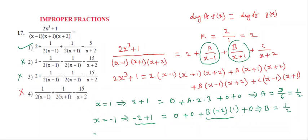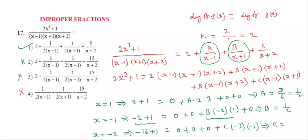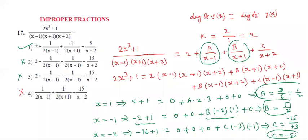If you want to find C also — take x equals minus 2 and substitute: 2(-2)³ + 1 = -16 + 1 = -15. All other terms are 0. C into (-2-1)(-2+1) = C·(-3)·(-1) = 3C. So C = -15/3 = -5. So C value is -5, B value is 1/2, A value is 1/2.